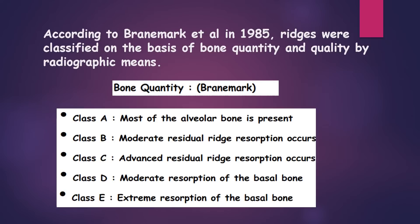According to Breiner-Mark et al. in 1985, the ridges were classified on the basis of bone quantity and quality by radiographic means. For bone quantity, it is classified into Classes A to E. In Class A, most of the alveolar bone is present. In Class B, moderate residual ridge resorption occurs. Class C, advanced residual ridge resorption occurs. Class D, moderate resorption of the basal bone. And Class E is extreme resorption of the basal bone.